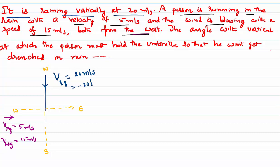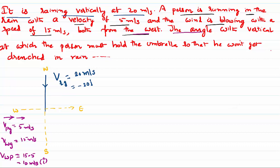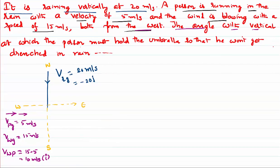If you want to find the velocity of the wind with respect to the person — since both are moving in the same direction, in relative velocity you subtract — that is 15 minus 5, which equals 10 meters per second. This is moving from west to east, towards the positive x-axis, so its value is 10 i-cap.